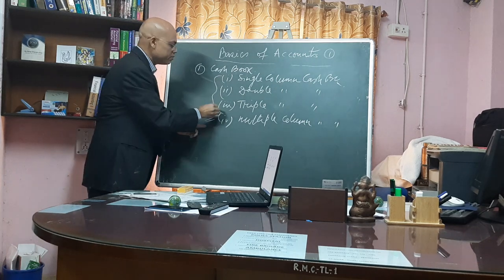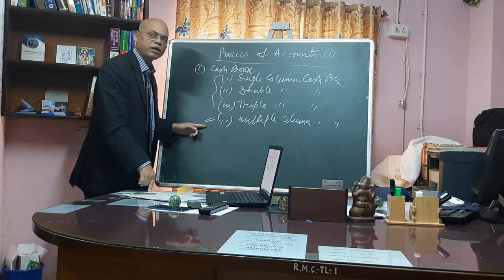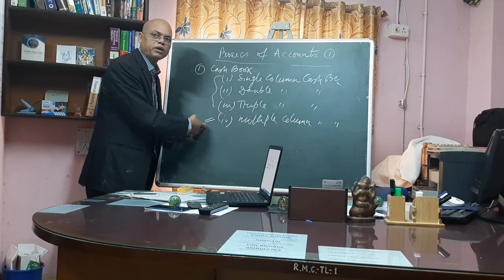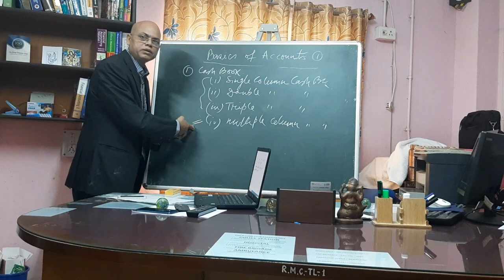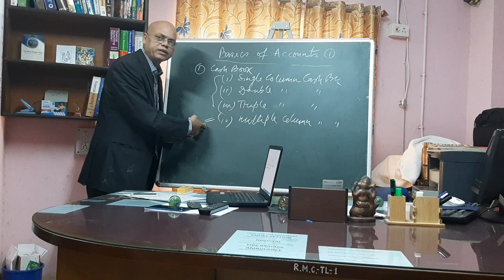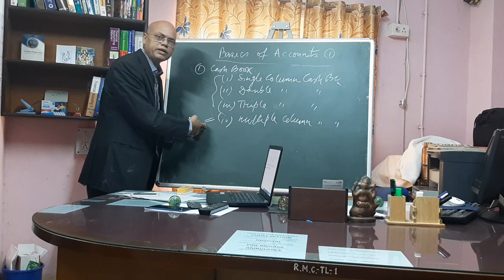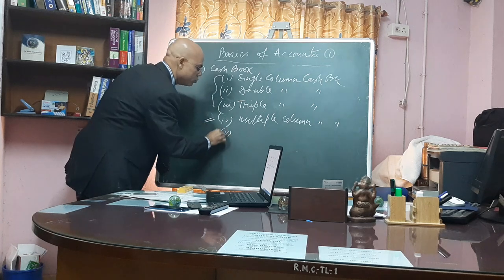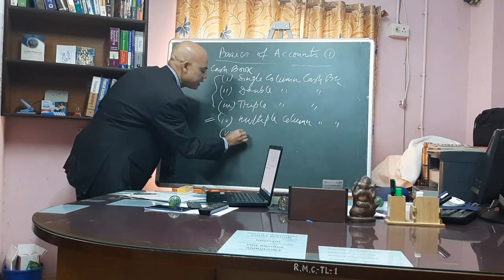Suppose you are getting money from different heads and paying for different purposes — in that case you can make a multiple column cash book with columns on the left side and right side, that is debit side and credit side, and a total column on both sides to get the closing balance of cash. Another type is the petty cash book.